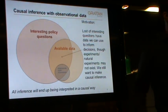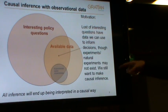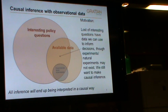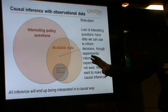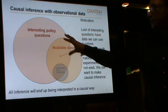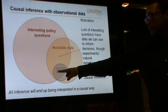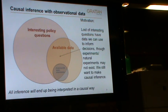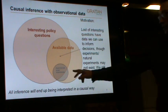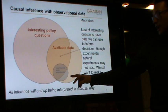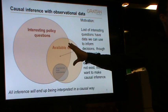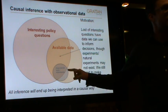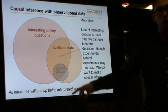Imagine the universe of interesting policy questions — the big pink circle. That includes things from what is the optimal price to pay for medication to what books should we teach our children at school. Some of these have data. There are experimental datasets generated by natural experiments we can use to get really good causal estimates. But there's a much bigger set of data that covers interesting policy issues that don't have really well-defined causal properties. I want to talk about those tonight.